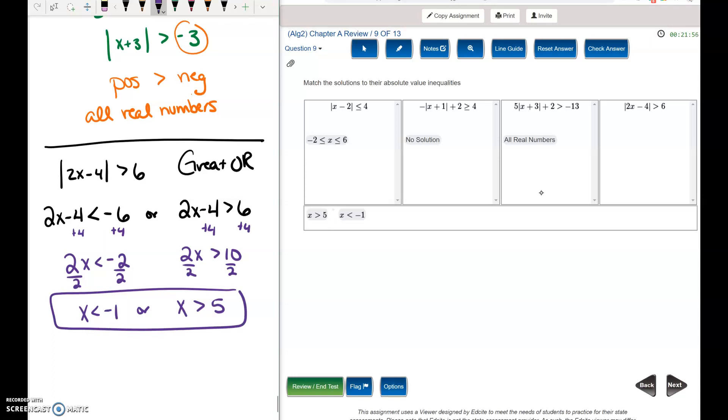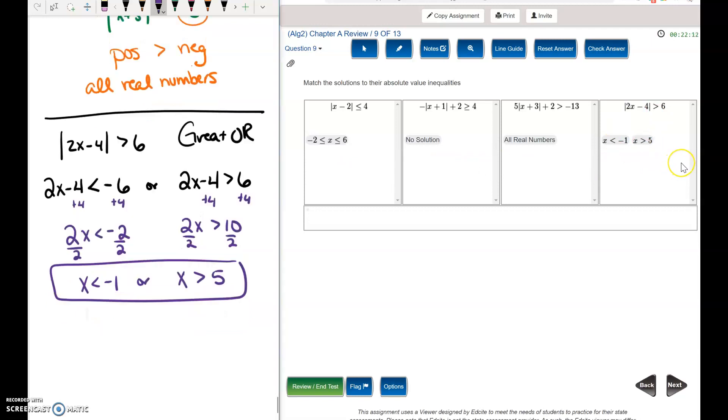This is what your answer is supposed to look like. X is less than negative 1 or x is greater than 5. What do you notice about these two answer choices that are left? They match those. You just drag them both into that cell. And then you've got your answers where they need to be.